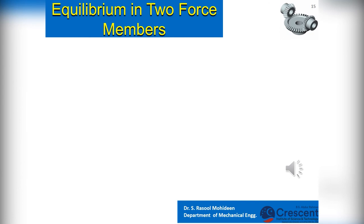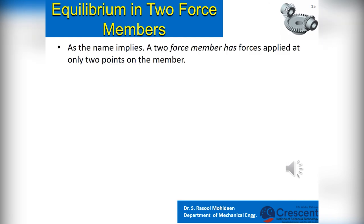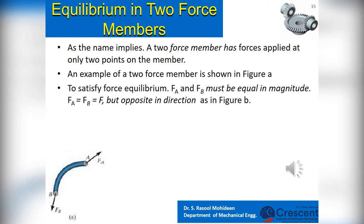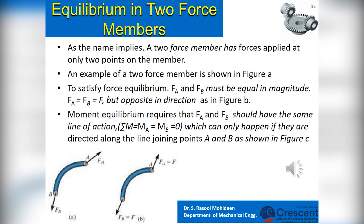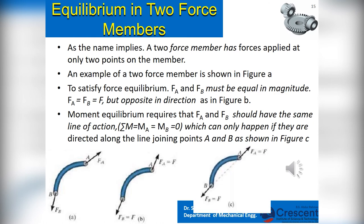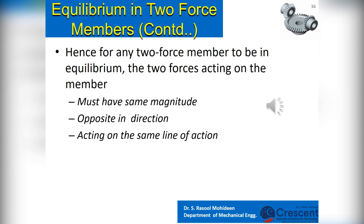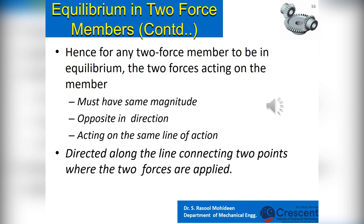We will now see how to arrive at conditions of equilibrium for linkages under different force applications. As the name implies, a two-force member has forces applied at only two points. To satisfy force equilibrium, FA and FB must be equal in magnitude but opposite in direction. Moment equilibrium requires that FA and FB have the same line of action — that is, summation of moments around A and B equals zero — which can only happen if they are directed along the line joining points A and B. Hence for any two-force member to be in equilibrium, the two forces must have the same magnitude, opposite direction, and act along the same line of action connecting the two points.